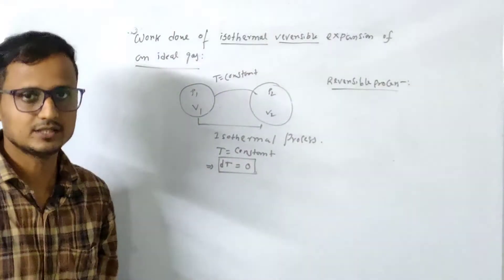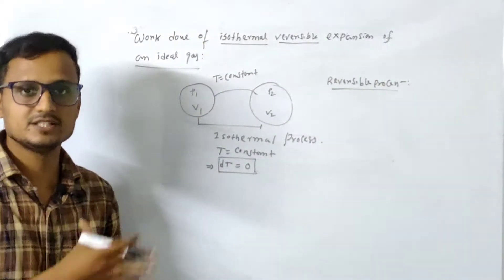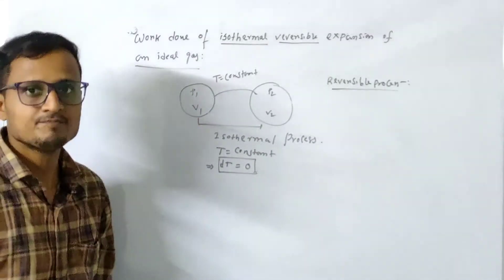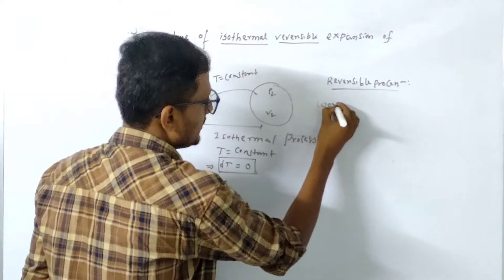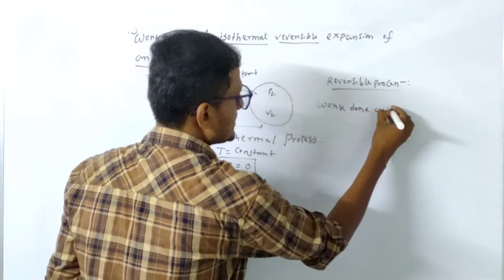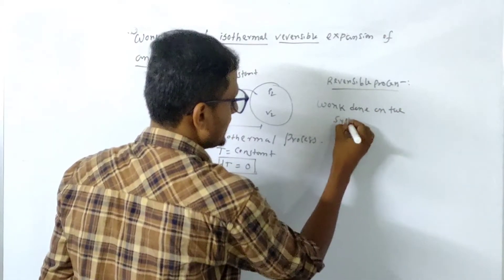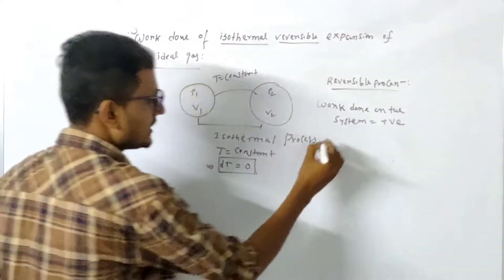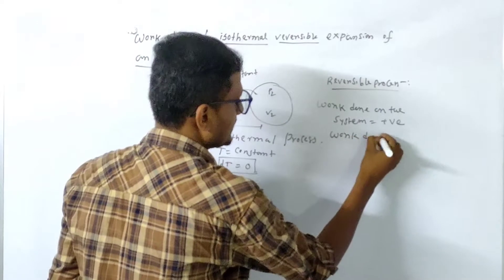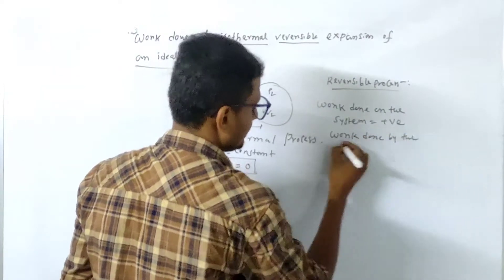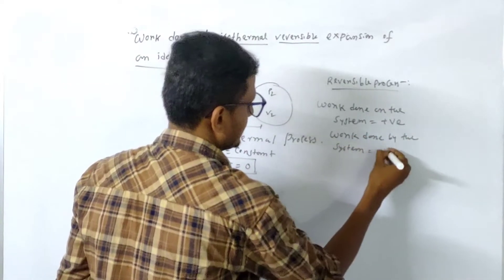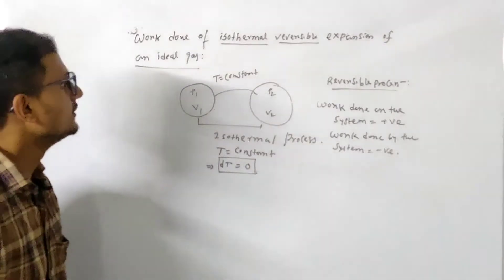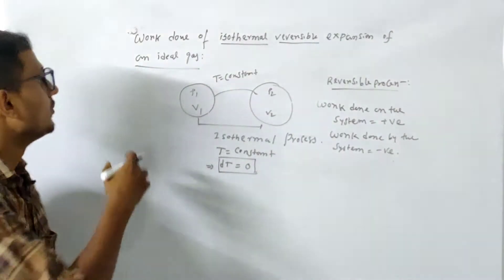Now what is work done? We need to know about the sign convention of work done. Work done on the system means we are doing work on the system — in that case the work will be positive. Work done by the system is negative.